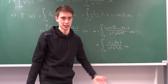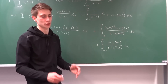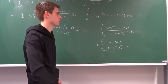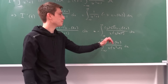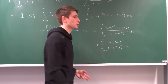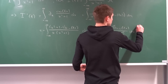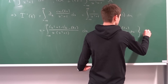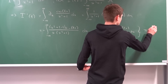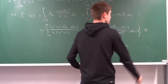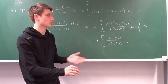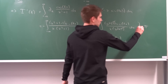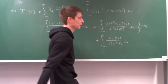You might notice that (x² + 1) cancels in the first term, and this is just a negative Dirichlet integral. Links to related videos will be in the description. This integral evaluates to pi (from minus infinity to infinity), but with the negative sign, it gives us minus pi.